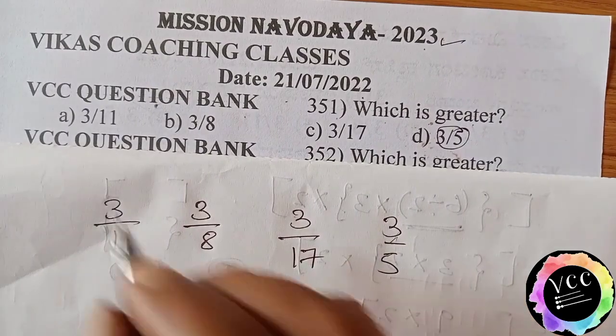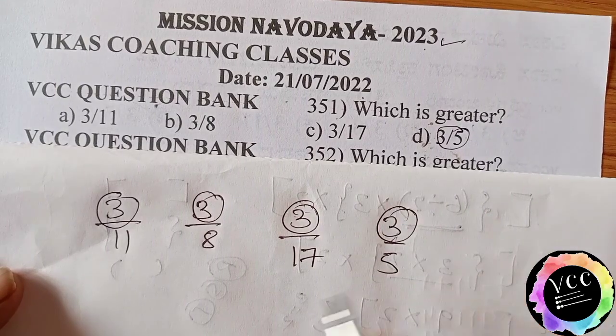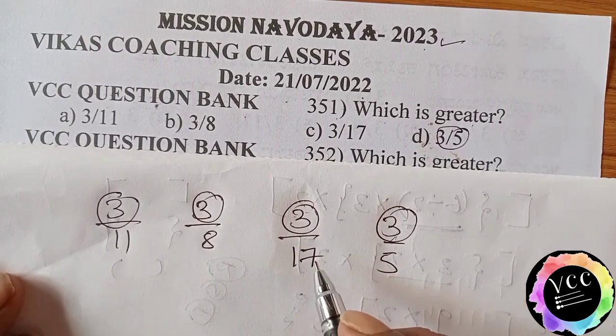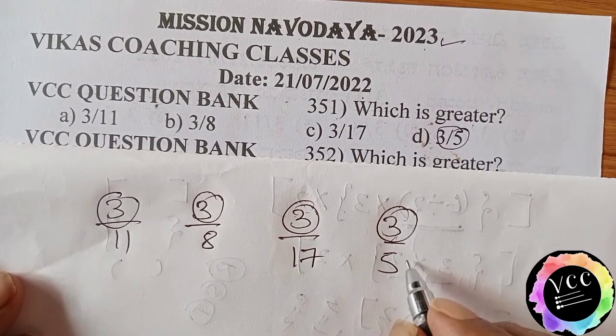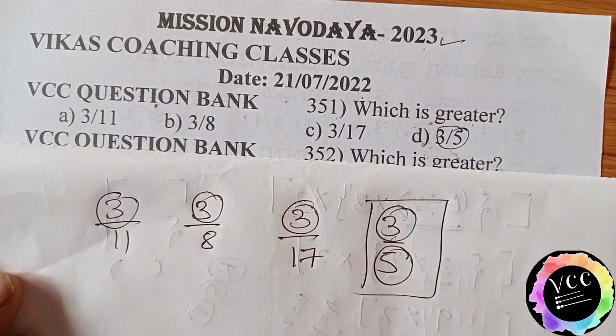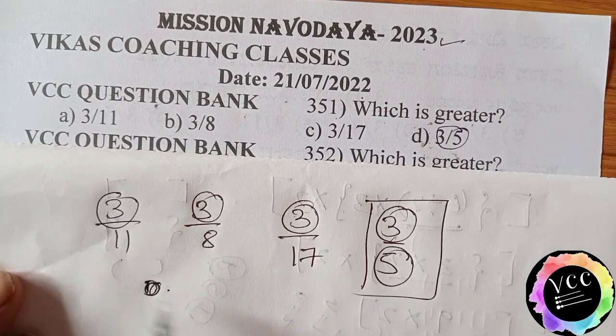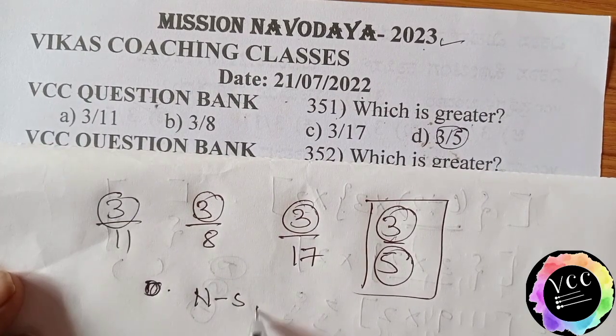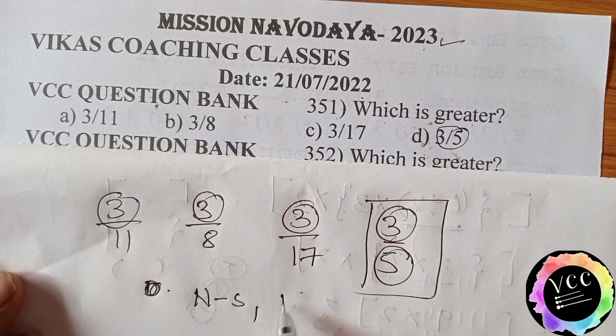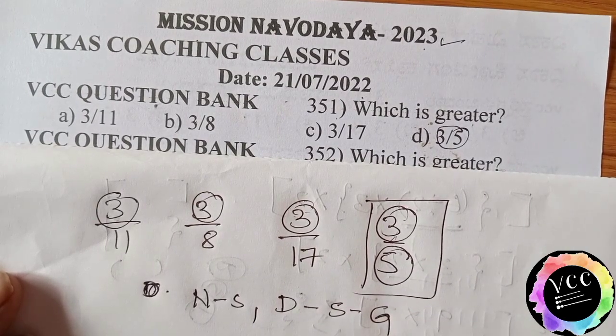Dear students, when numerators are same, which denominator is smaller, that is greater fraction. Once again, this is a trick. When numerators are same, which denominator is smaller, that is greater fraction.